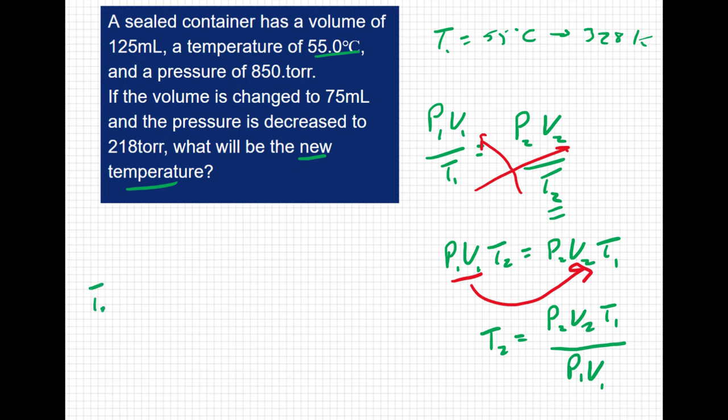T2 is going to equal P2, which is given to us as 218 torr, and V2, which is given to us as 75 milliliters, times T1, which we've converted to 328 Kelvin. We're going to divide that whole thing by P1, which is 850 torr, and V1, which is 125 milliliters.